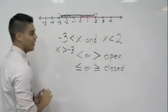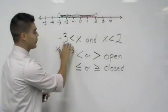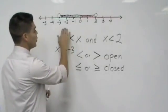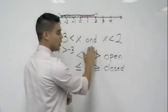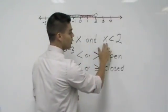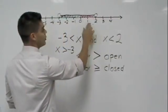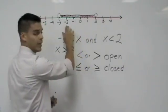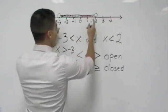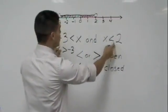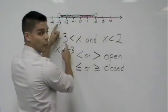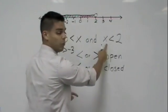Again, we're talking about values that are greater than negative three. So negative one, negative two, zero, one, two. But they also have to be smaller than two. So what's smaller than two? One, zero, negative one, negative two. So these are the values that make this conjunction true, because all these values are greater than negative three and smaller than two.